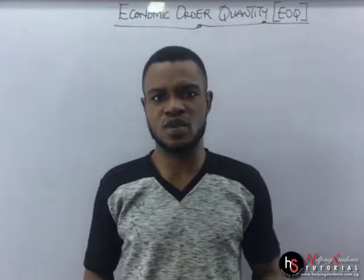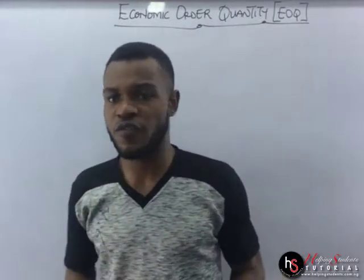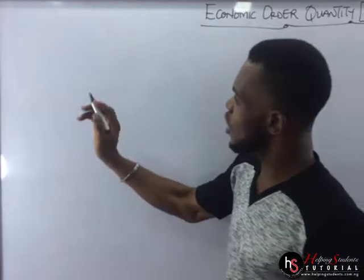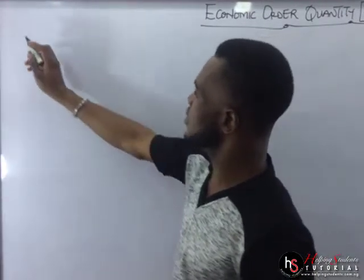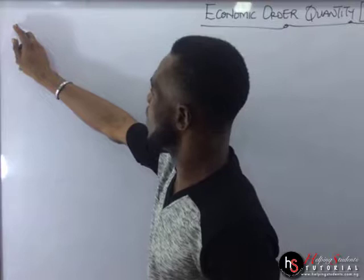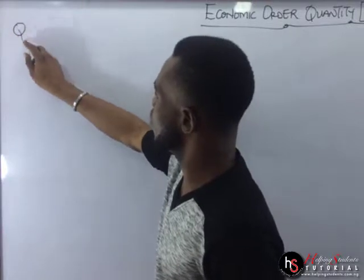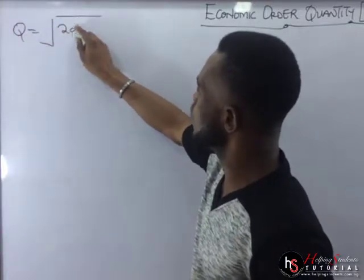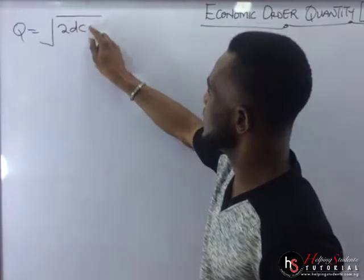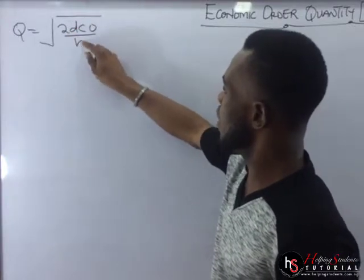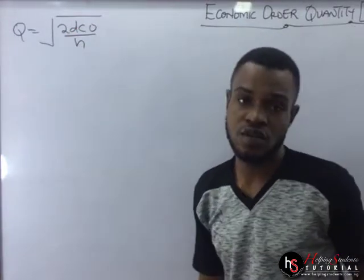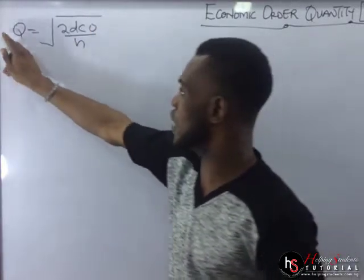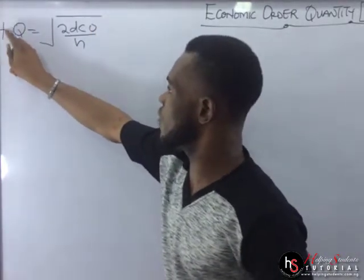And you must know it. First of all, let me bring this to your notice. We have the formula for EOQ. We say Q is equal to the square root of 2DCO over H. Take note of this — this is the formula generally for EOQ. It is very, very important.